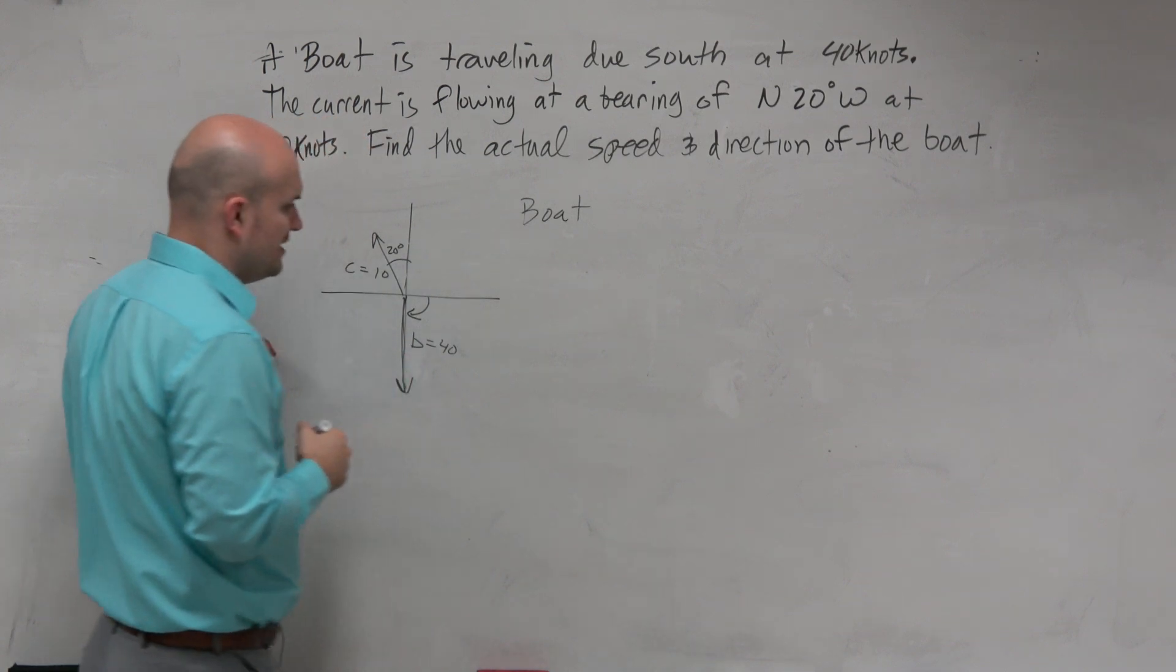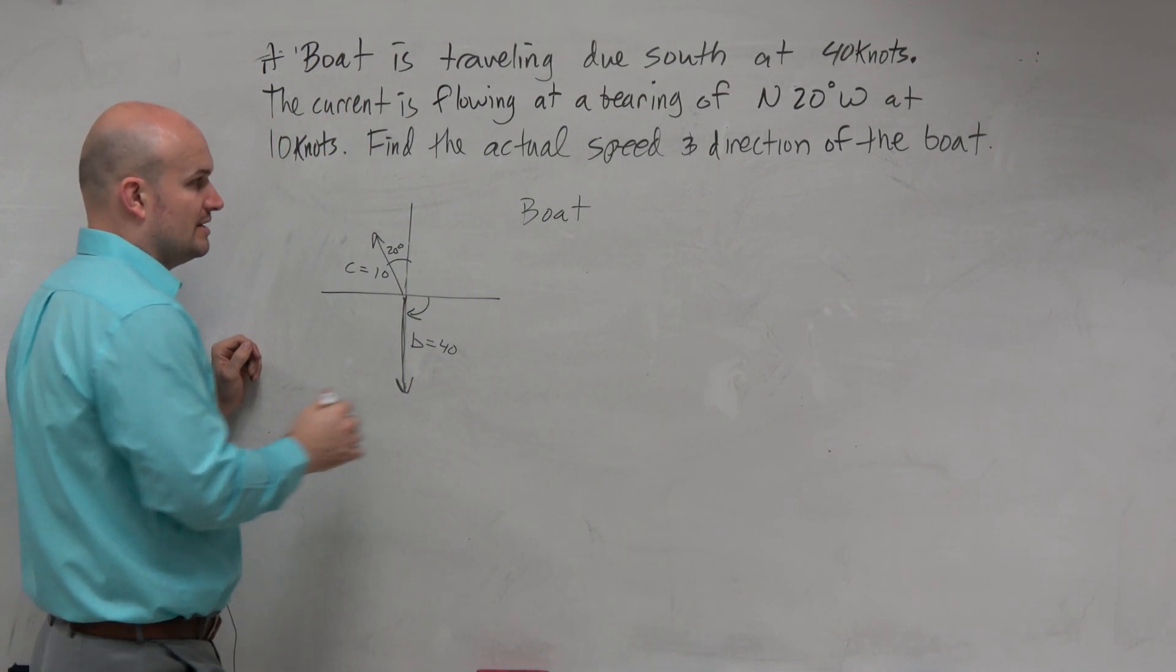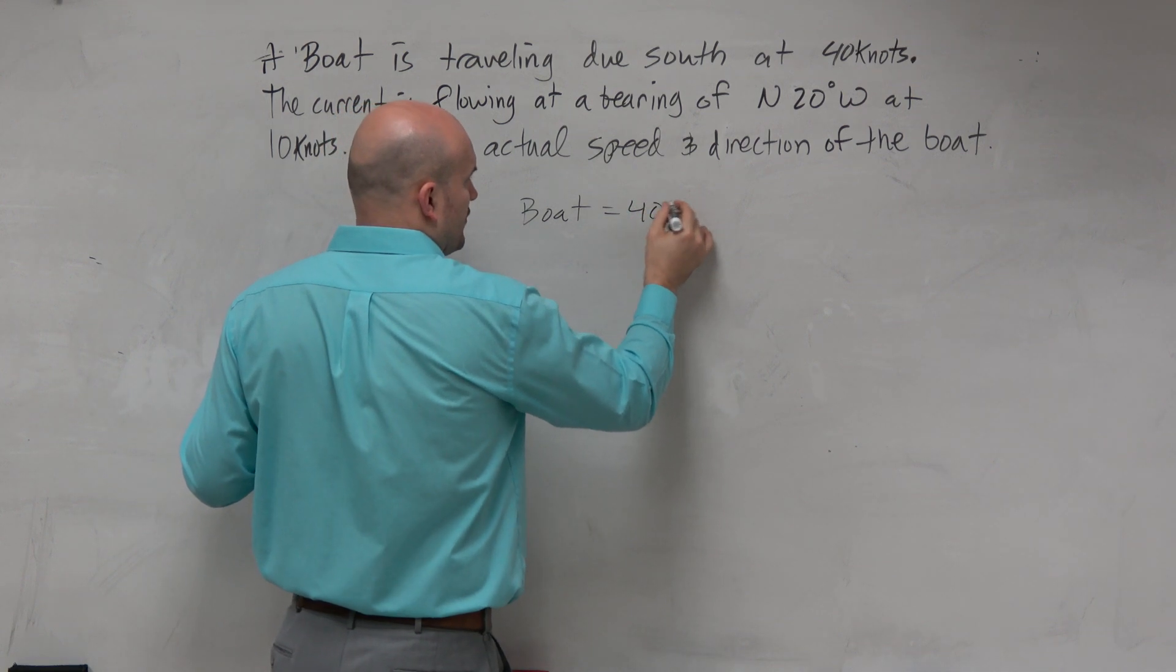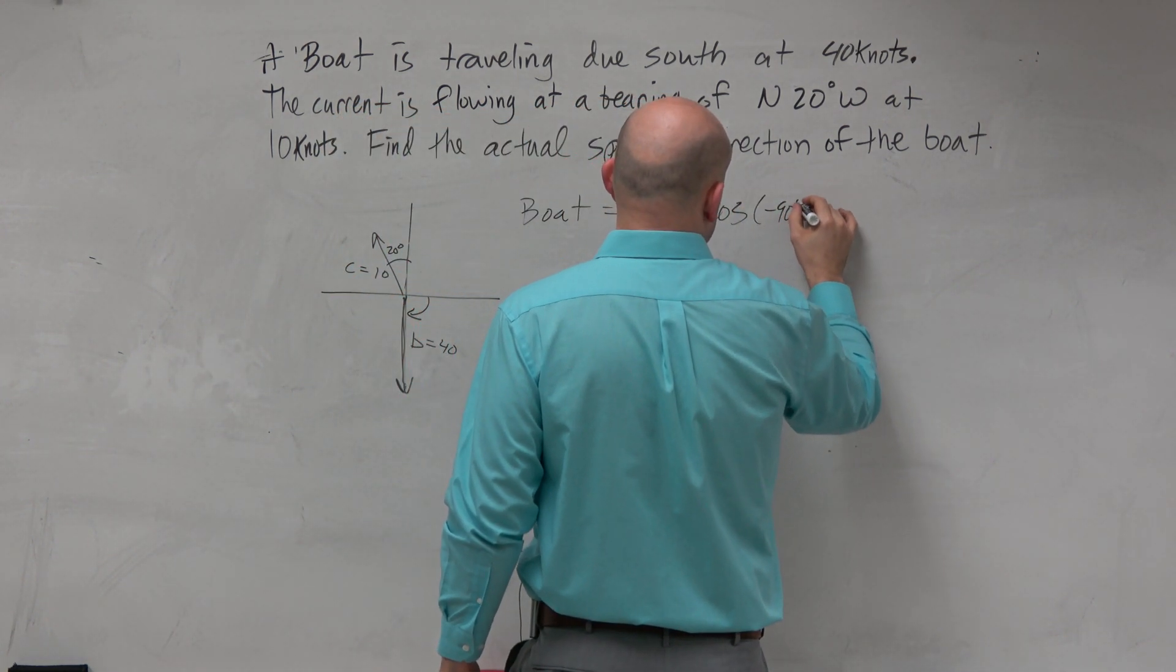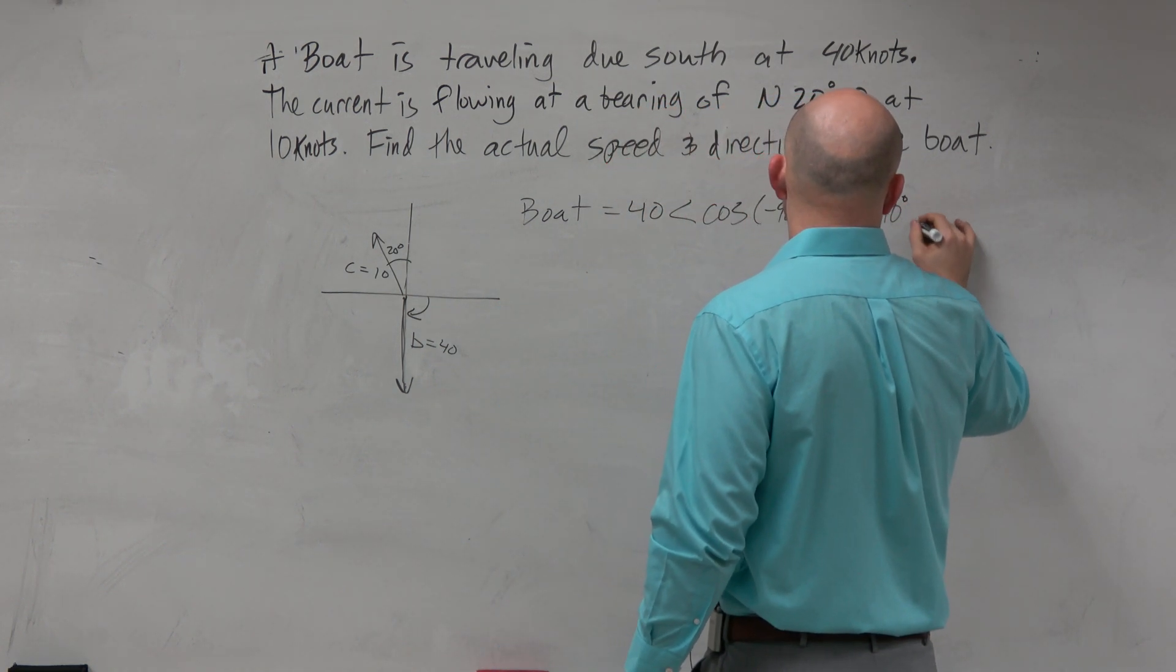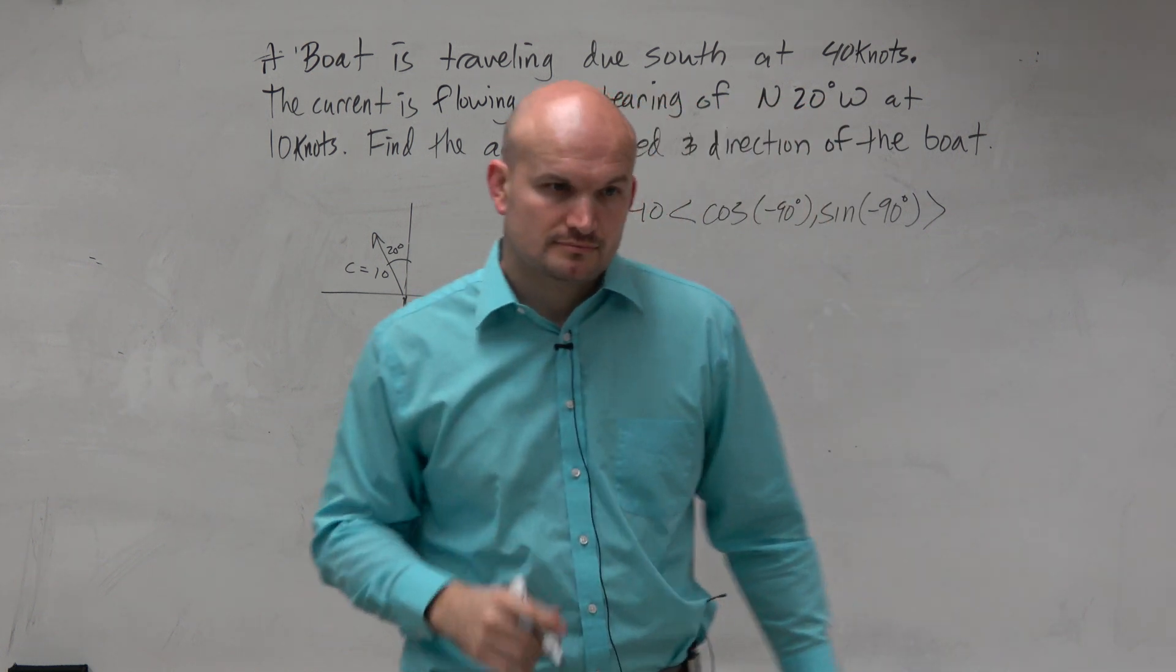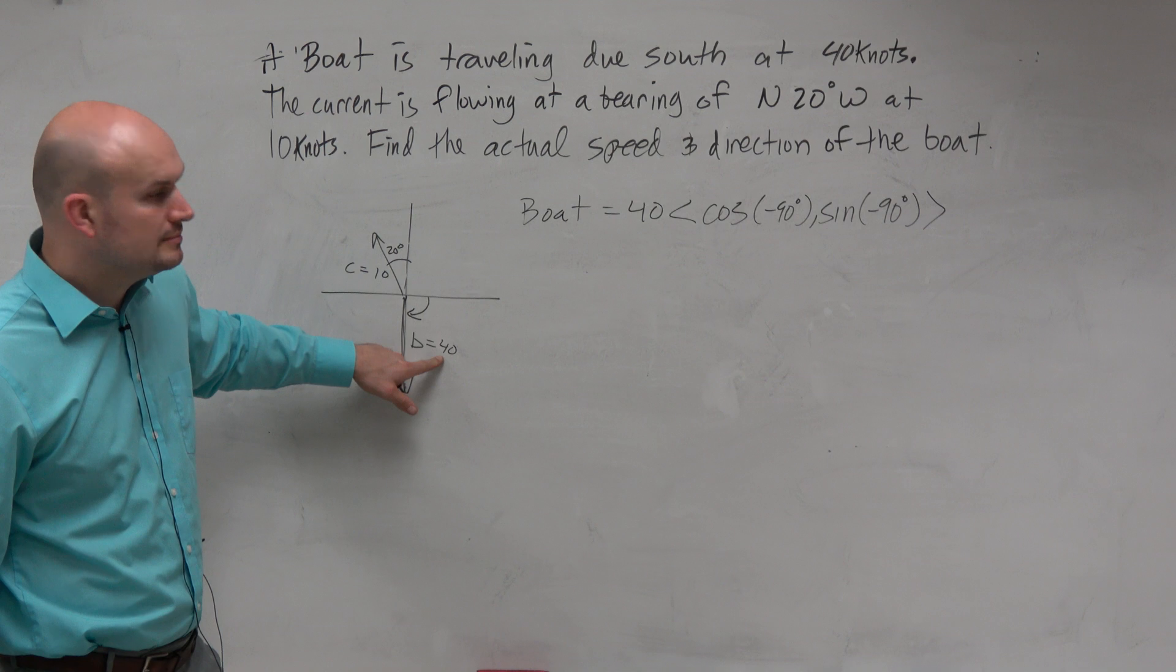And then what is the magnitude of that boat? 40. So I could write 40 times the cosine of negative 90 degrees, the sine of negative 90 degrees. So why is 40 the magnitude? Because that's how fast the boat is traveling.